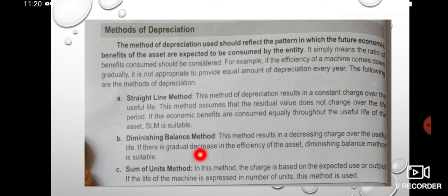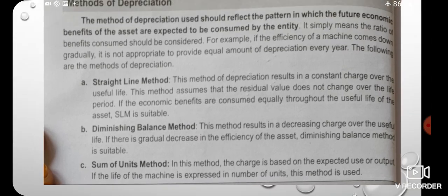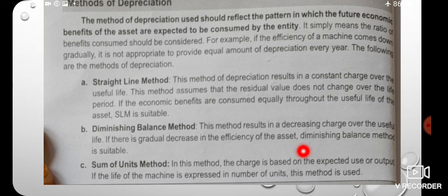In the units of output method, the charge is based on the expected use or output. If the life of the machine is expressed in the number of units, this method is used. The depreciation is calculated based on the number of units produced.